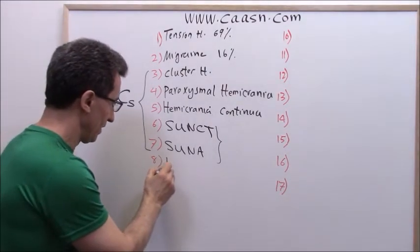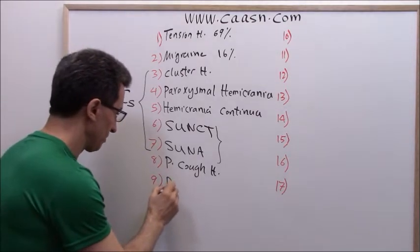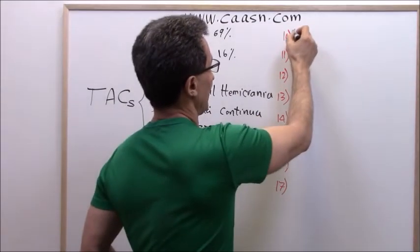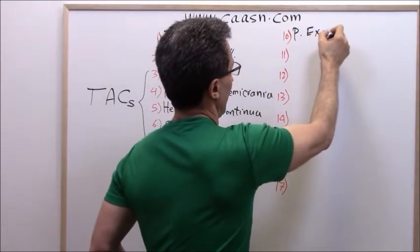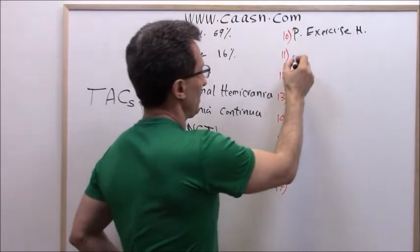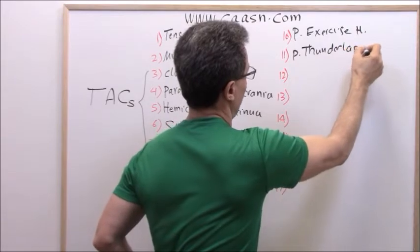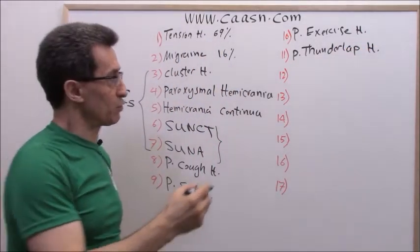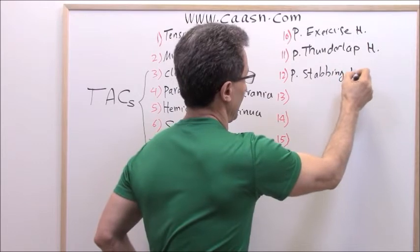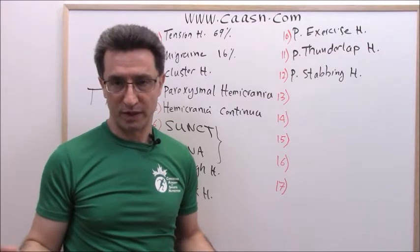Number eight is primary cough headache. Number nine is primary sex headache. Number ten is primary exercise headache. Number eleven is primary thunderclap headache. Number twelve is primary stabbing headache — formerly known in medicine as 'jabs and jolts,' but not anymore.